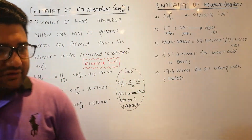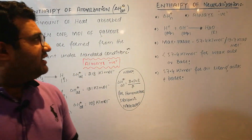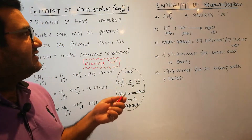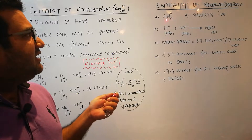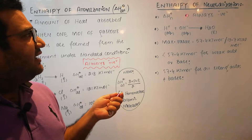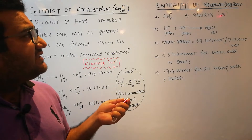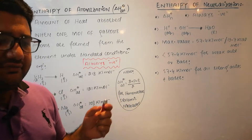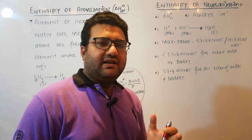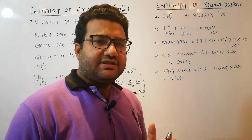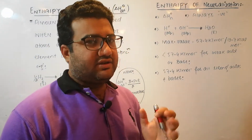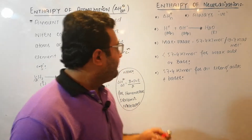After enthalpy of atomization, the next is the enthalpy of neutralization. Its symbol is ΔH°N. It is always negative, which simply means that neutralization is always an exothermic process.